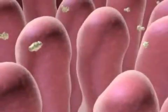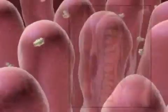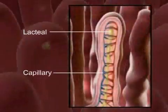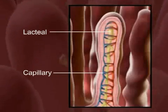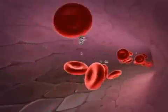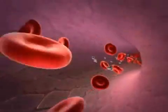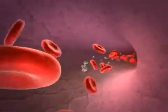The walls are covered with villi where nutrient absorption takes place. The structure of each villus contains a capillary and lacteal to pick up the digested nutrients. The nutrients are now transported by the blood to all the cells of the body.